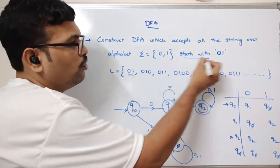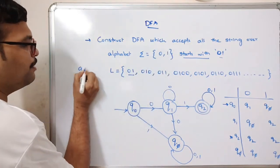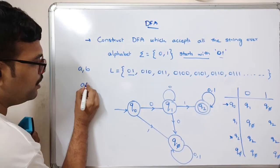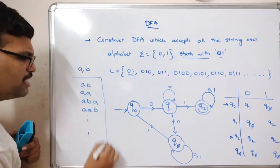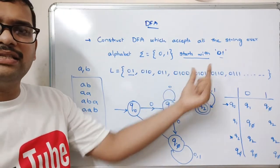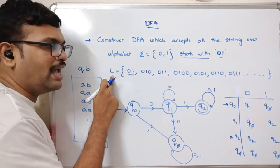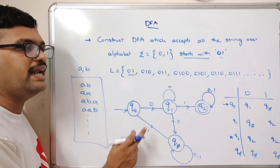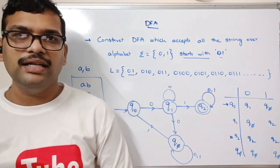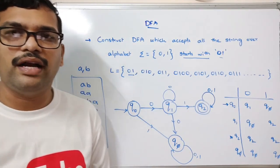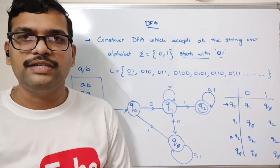In general, all 'starts with' DFA problems will have a dead state because there is a restriction on how strings must begin. You may see input alphabets like {a, b} with problems starting with 'ab', 'aa', etc. — the structure is the same. First write the language, then construct the DFA, then write the transition table. If you have doubts, post in the comments. Like, share, and subscribe — thanks for watching!